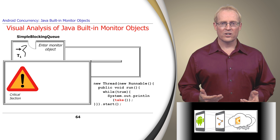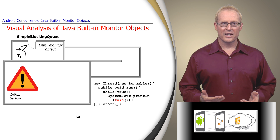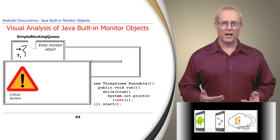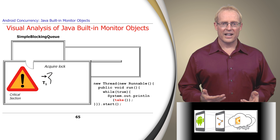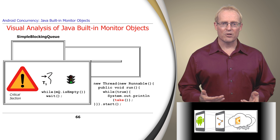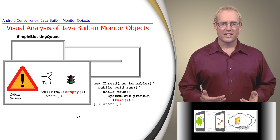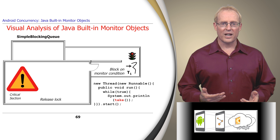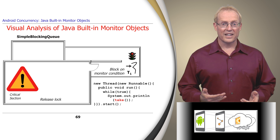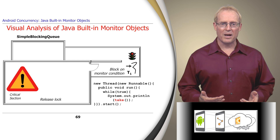When thread T1 calls take on an empty simple blocking queue, it enters the monitor object. Assuming no other thread is active inside the monitor object, T1 acquires the monitor lock and starts to run the code in the critical section, where it determines that the underlying ArrayList MQ is empty. As long as the MQ list is empty, T1 will wait on the monitor condition. Calling wait on the monitor condition atomically releases the monitor lock and blocks the current thread until notify or notifyAll is called on the same object.